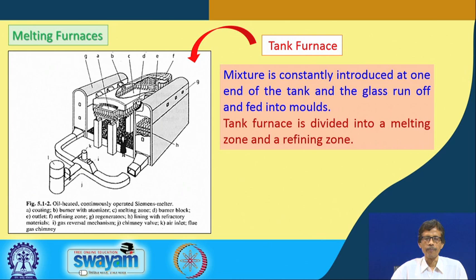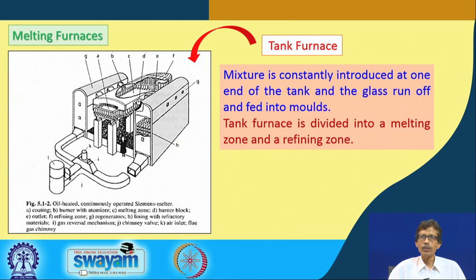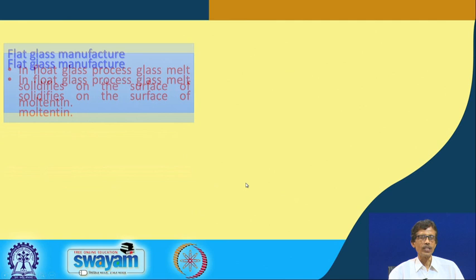We use a tank furnace for making this type of glass material. The mixture is constantly introduced at one end of the tank and the glass melt is fed into molds to give it corresponding shapes. The tank furnace is divided into a melting zone C and a refining zone F — two zones, one melting zone and one refining zone.